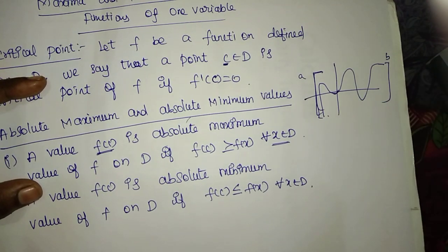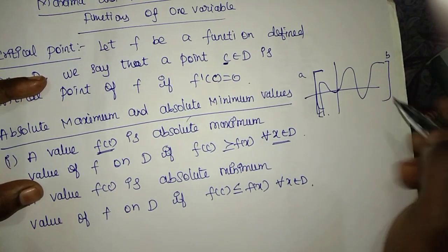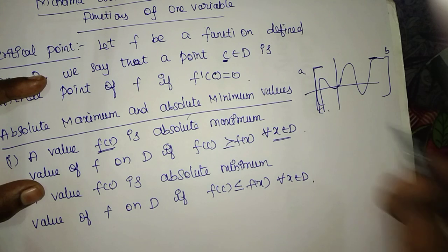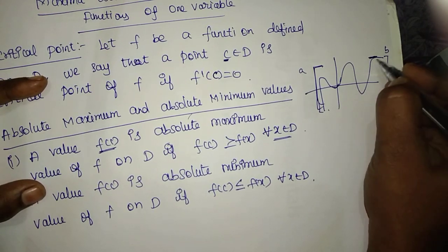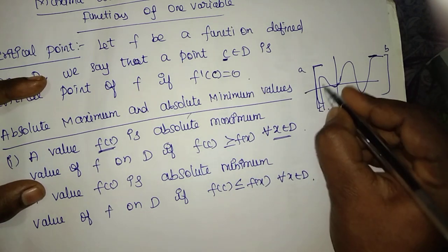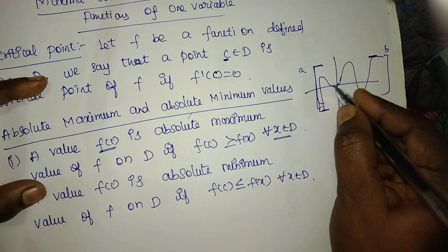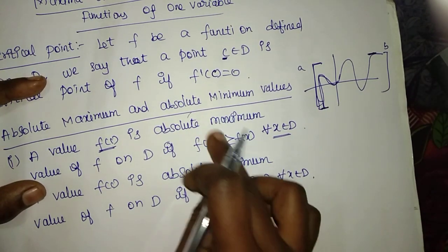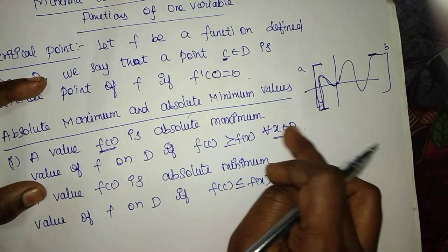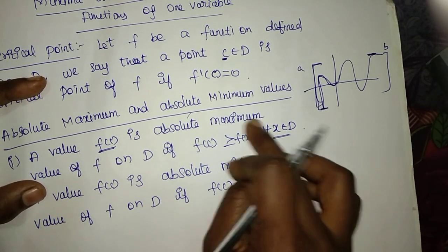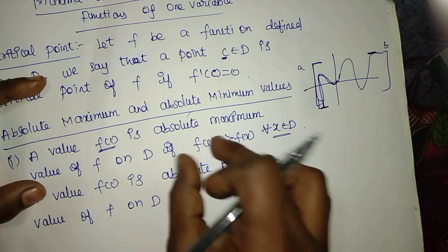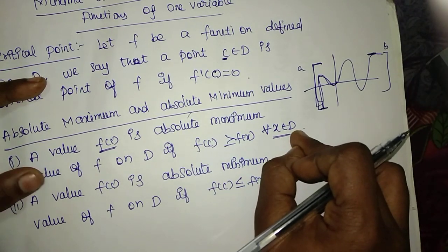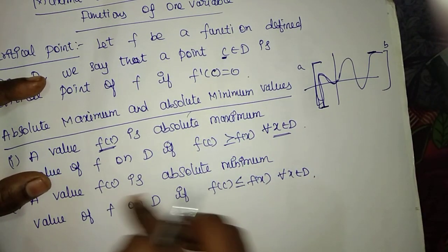We have a maximum value in this example. The maximum value will be identified — this is the absolute maximum value, and that is the absolute minimum value. In the graph, the lowest value is the absolute minimum value. So if F of C is maximum, F of X is maximum — F of C is greater than or equal to every F of X for all X belonging to D.